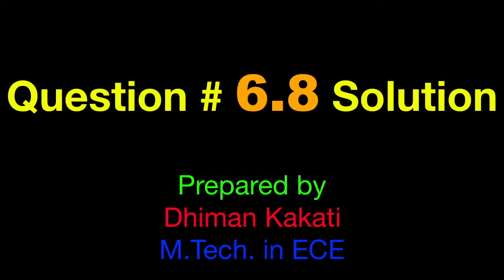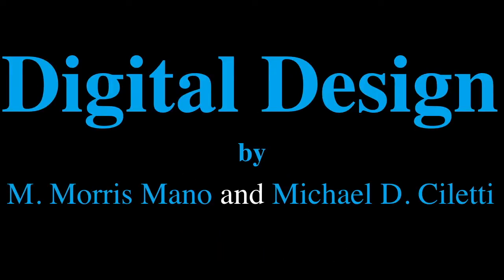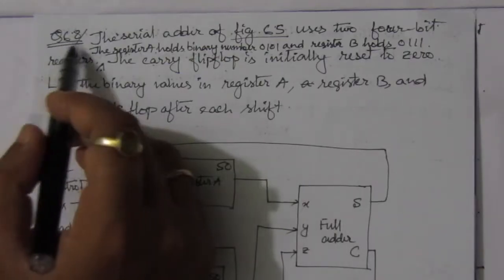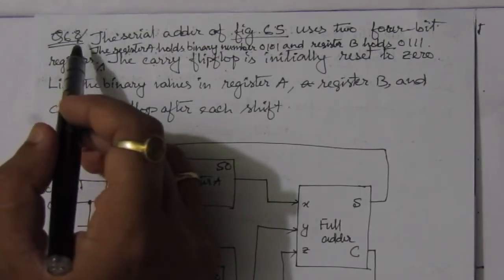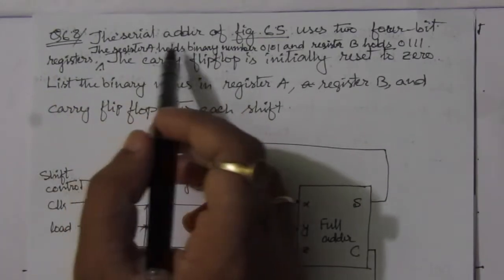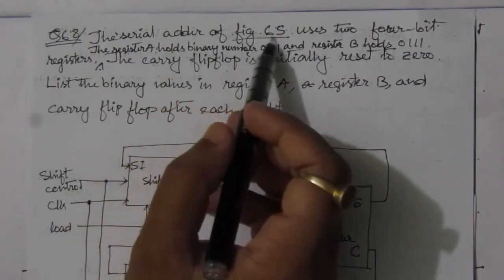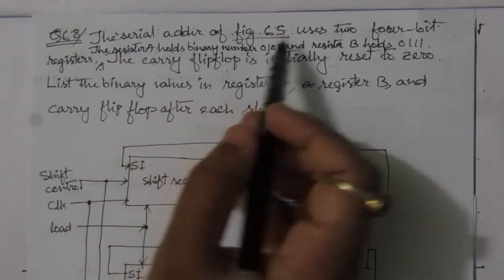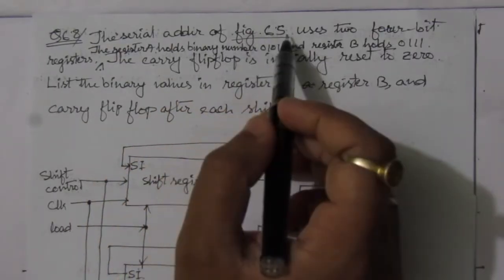Dear students, I welcome you all to this problem solution series in digital electronics. I am solving problems from Digital Design by Morris Mano and Michael Ciletti. In this video I am solving problem number 6.8 from chapter number six — the serial adder of figure 6.5.